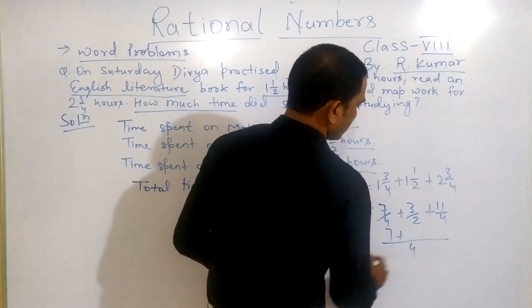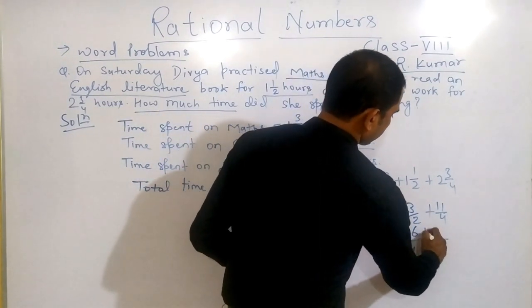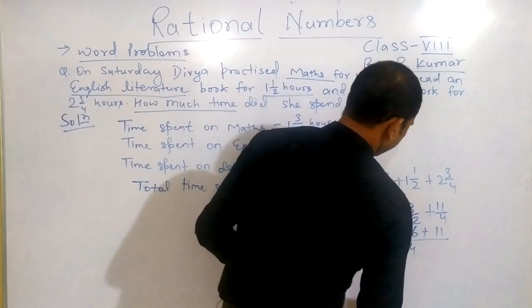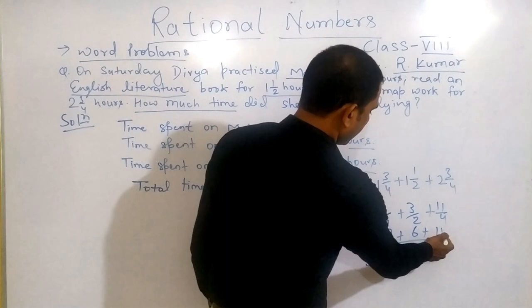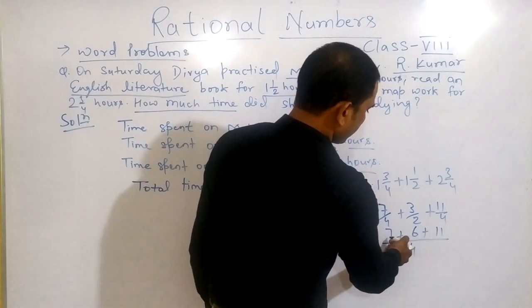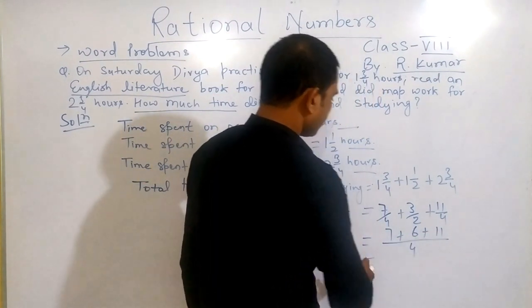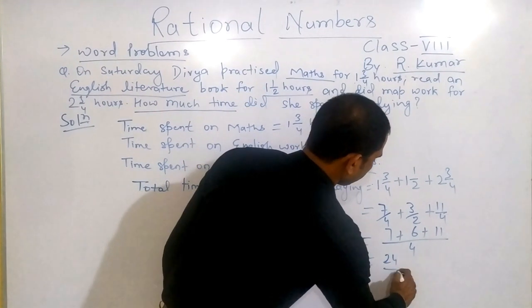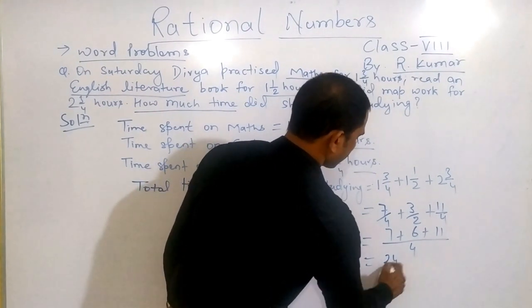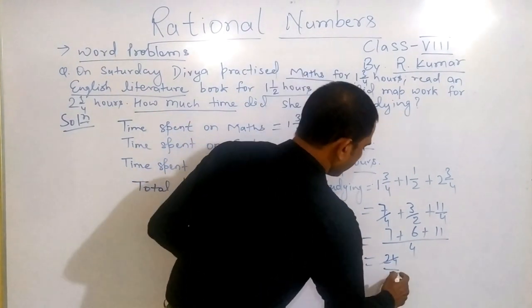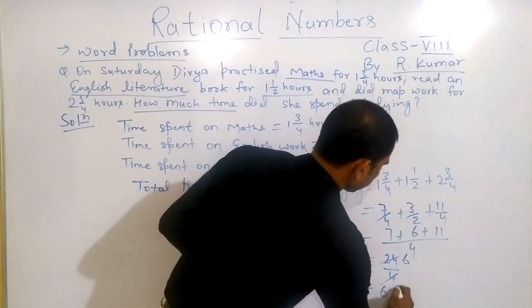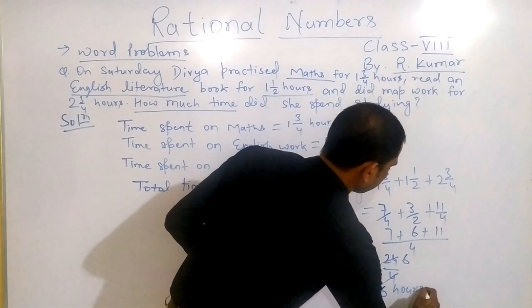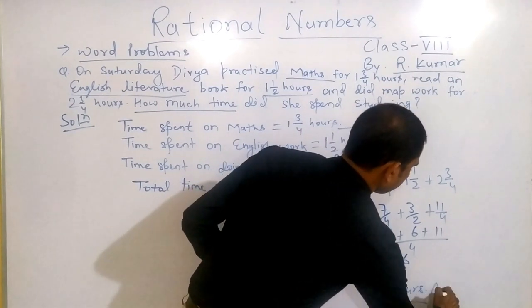Now you will take LCM of 4, 2 and 4, it will be 4 only. 7 plus 2 times 2 is 6 plus 11. When you add it together, you will get 7 plus 6 is 18, plus 6 is 24 by 4. You can reduce to its lowest, it will be 6 hours.